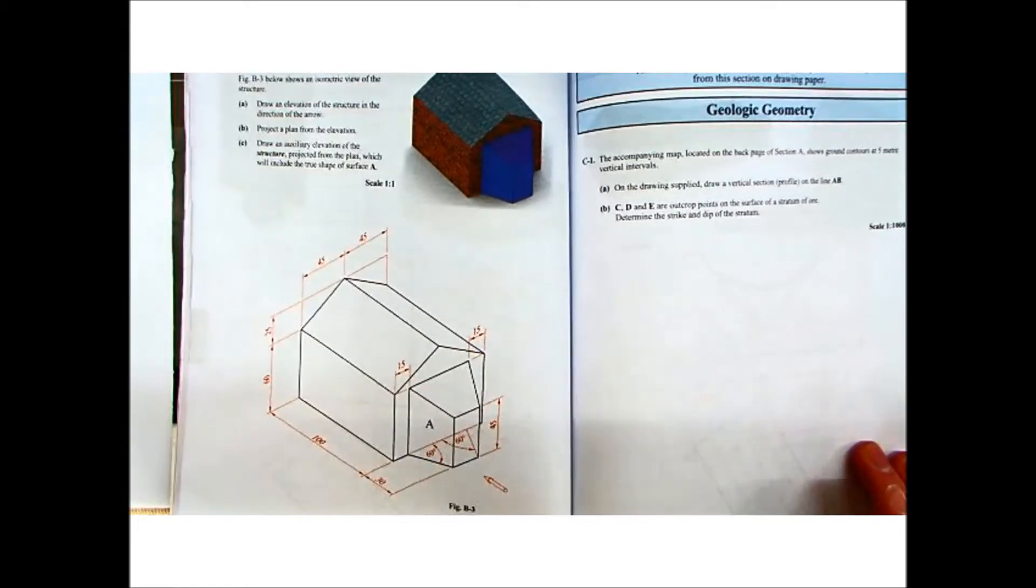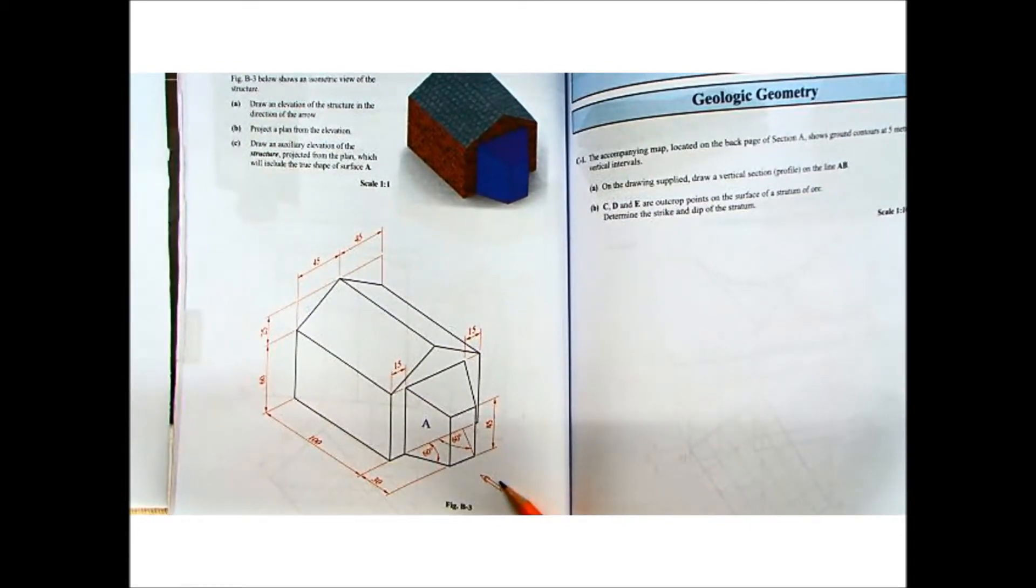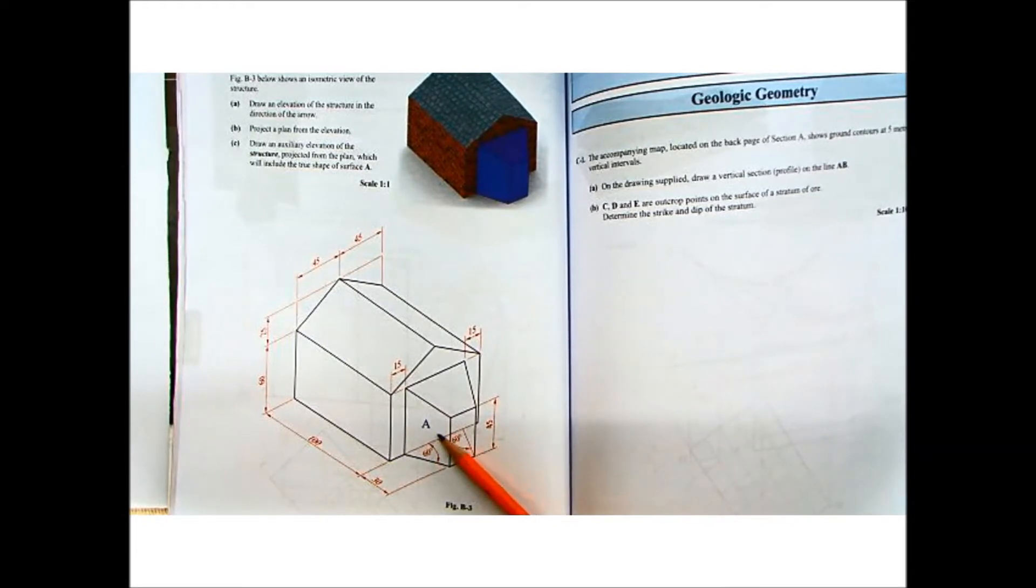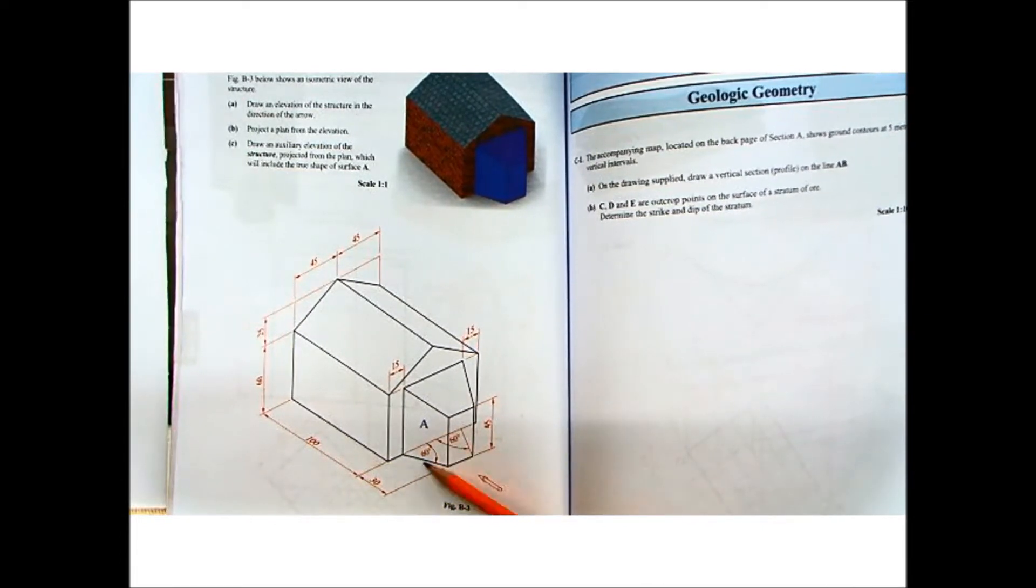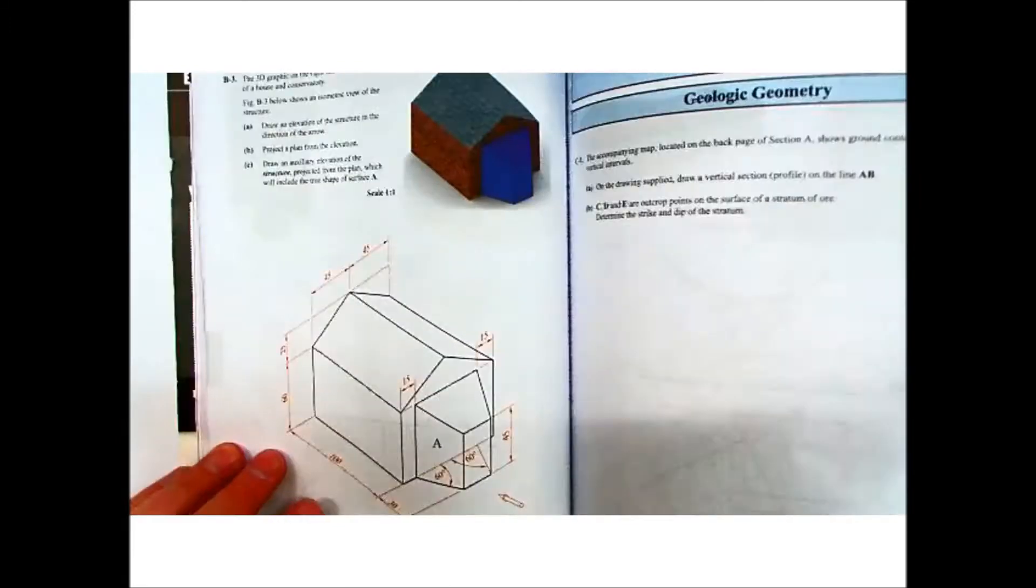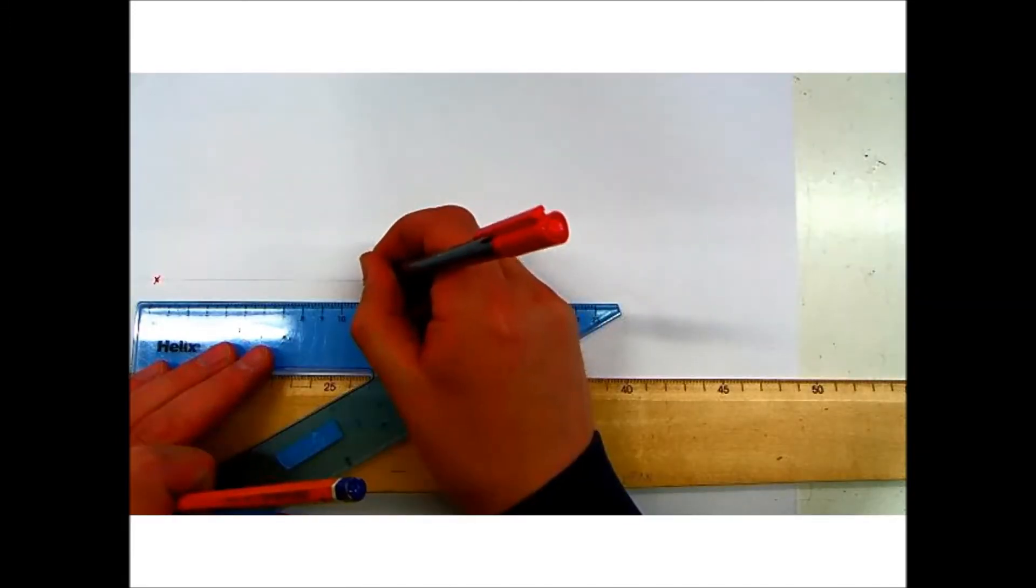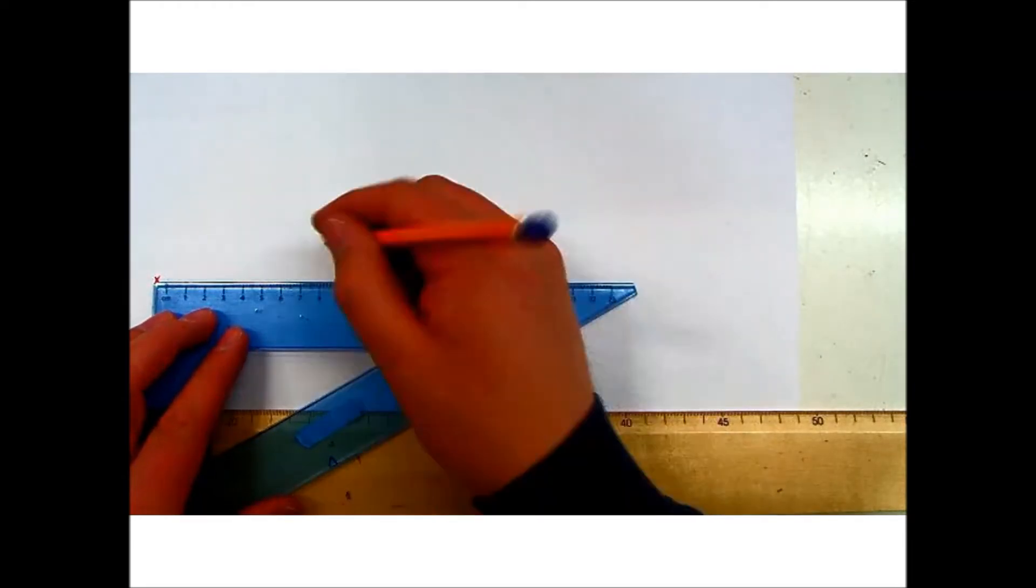Alright, so first things first, draw an elevation of the structure in the direction of the arrow A. We have surface A here, the direction of this arrow and surface A there. So we're going to need to do true shape of that at some stage. That's going to go up this direction to the right hand side. So we'll start on the left. We'll start with the X, Y line, pick a point to start off with and we'll start putting in the box it fits into.